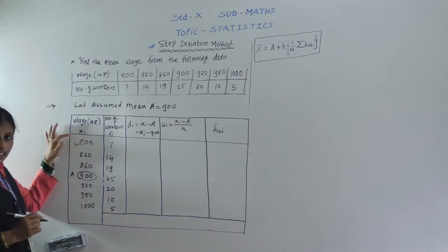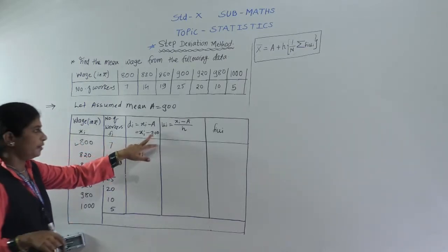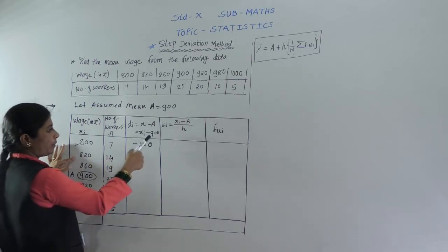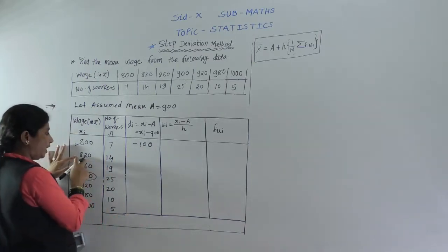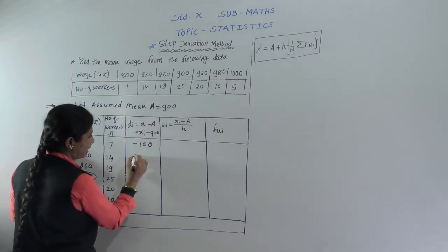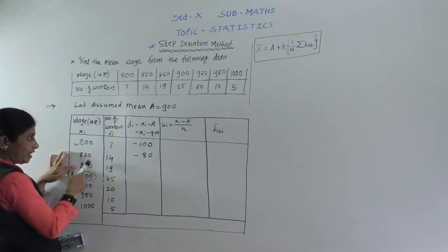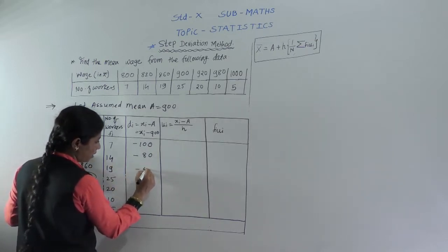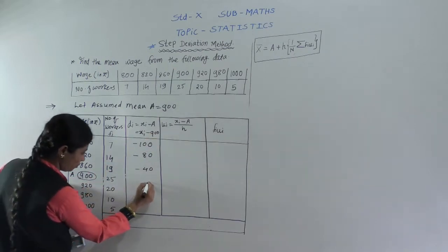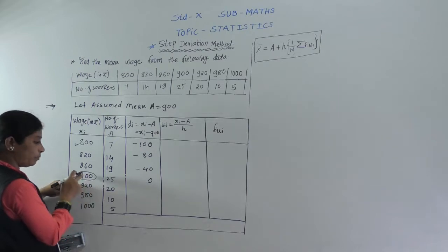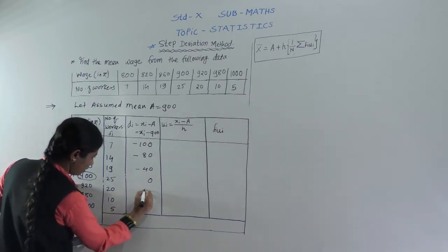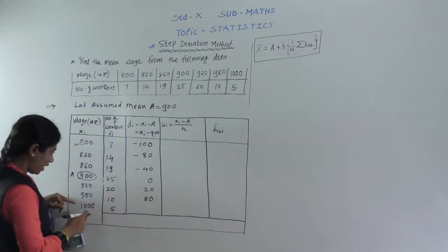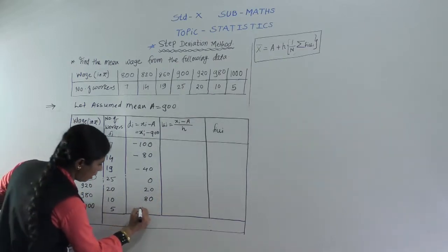We find di = xi minus 900. For xi = 800: 800 minus 900 gives minus 100. For 820: minus 80. For 860: minus 40. For 900: zero. For 980: plus 80. And for 1000: 1000 minus 900 gives plus 100.